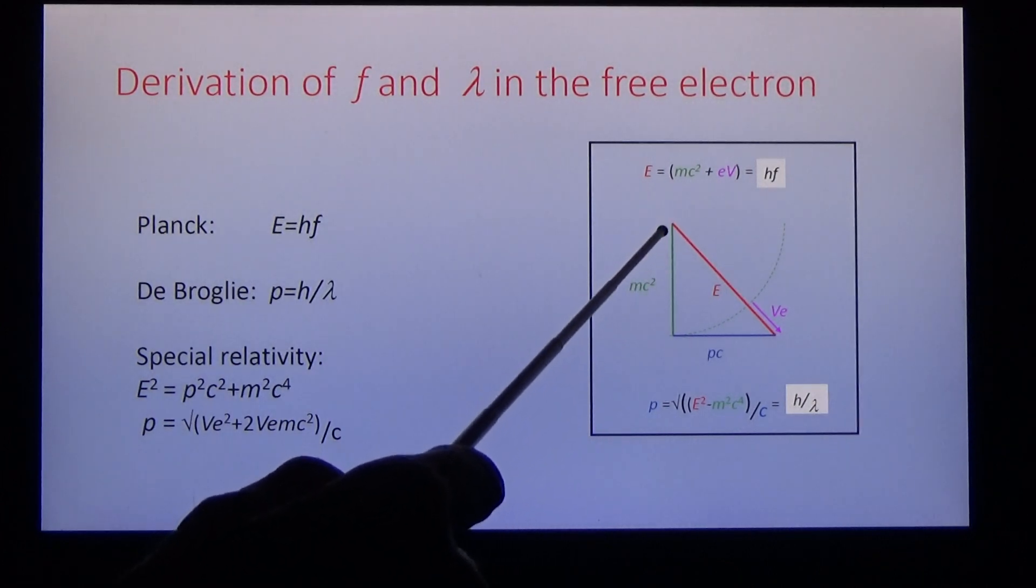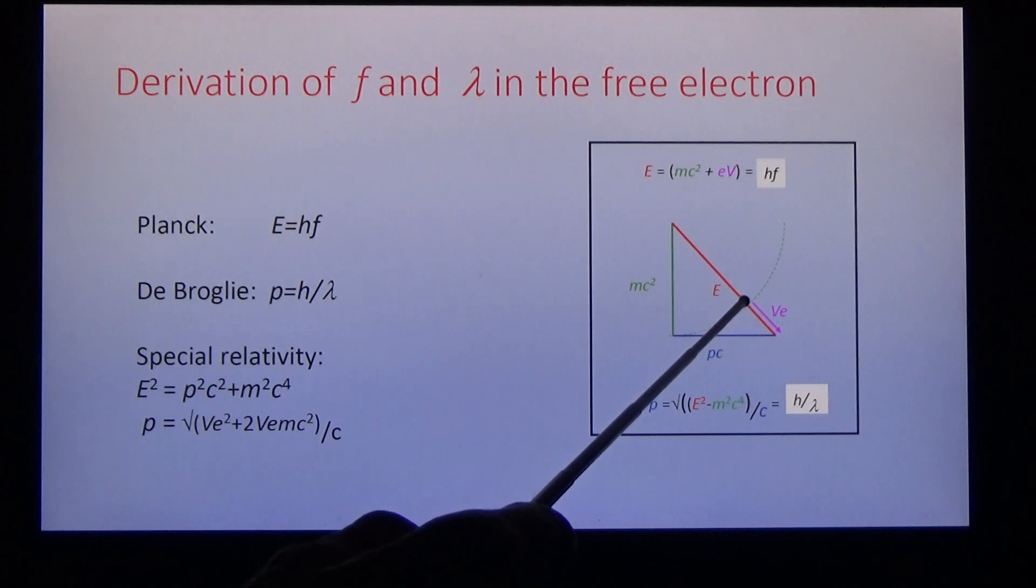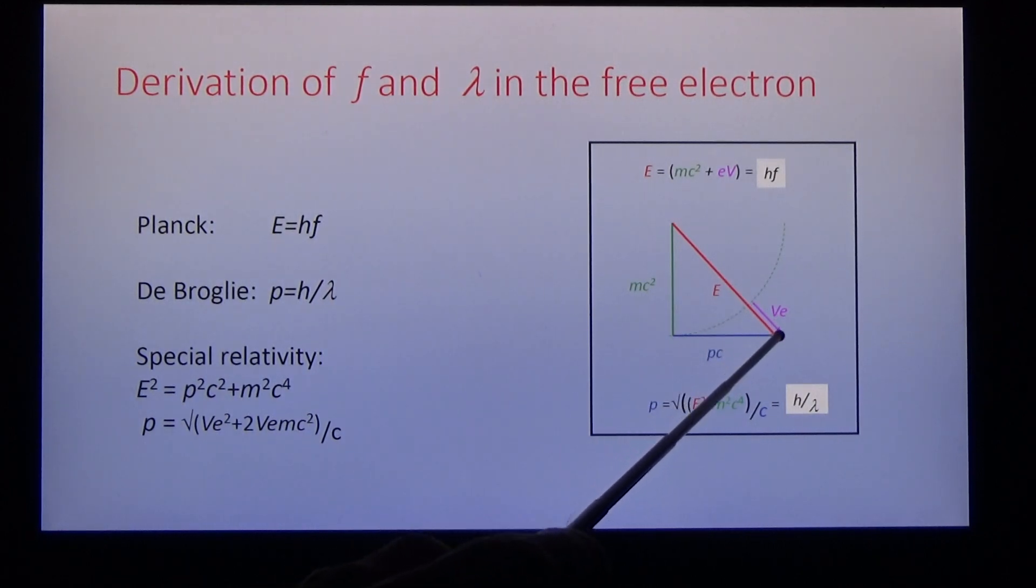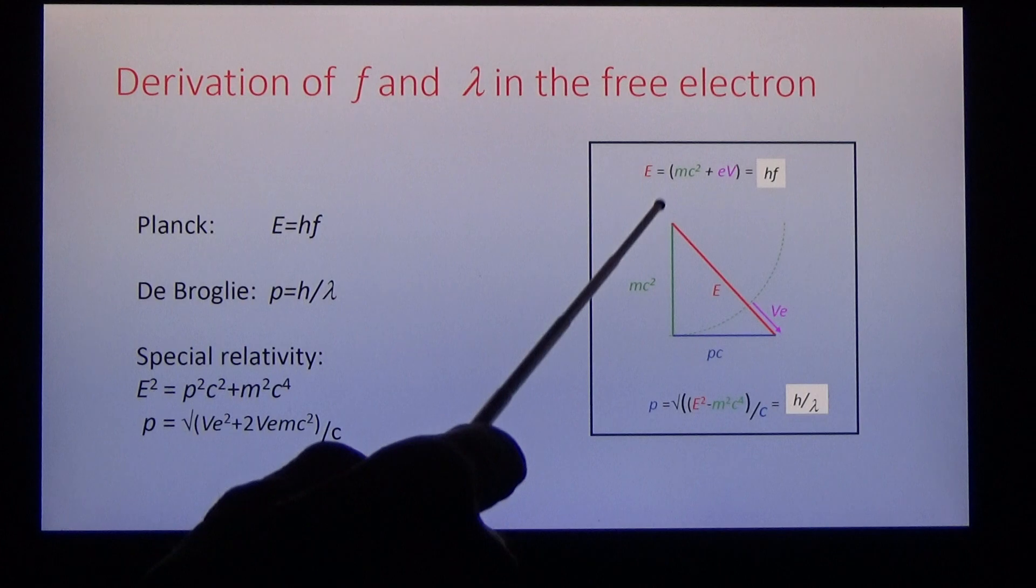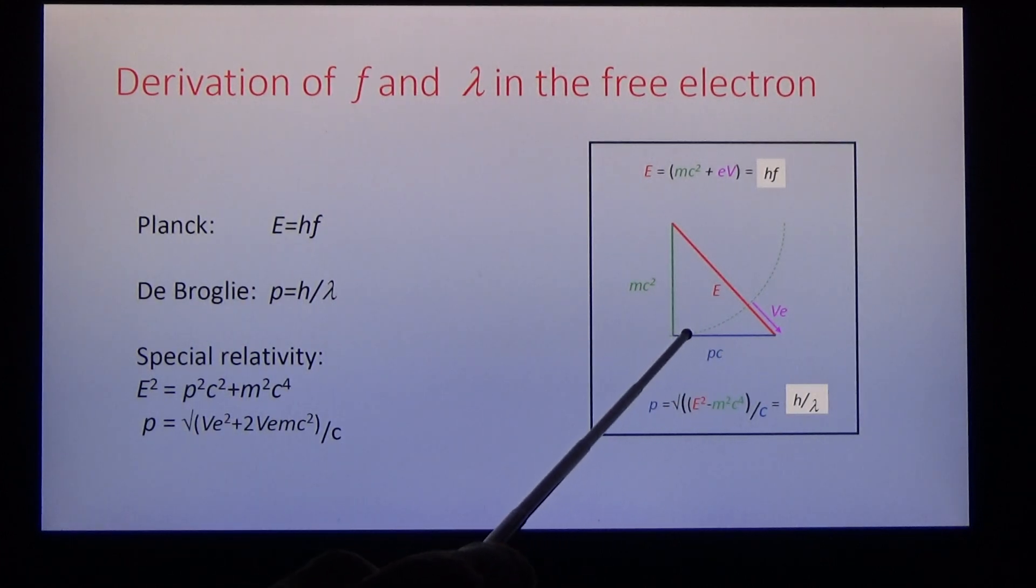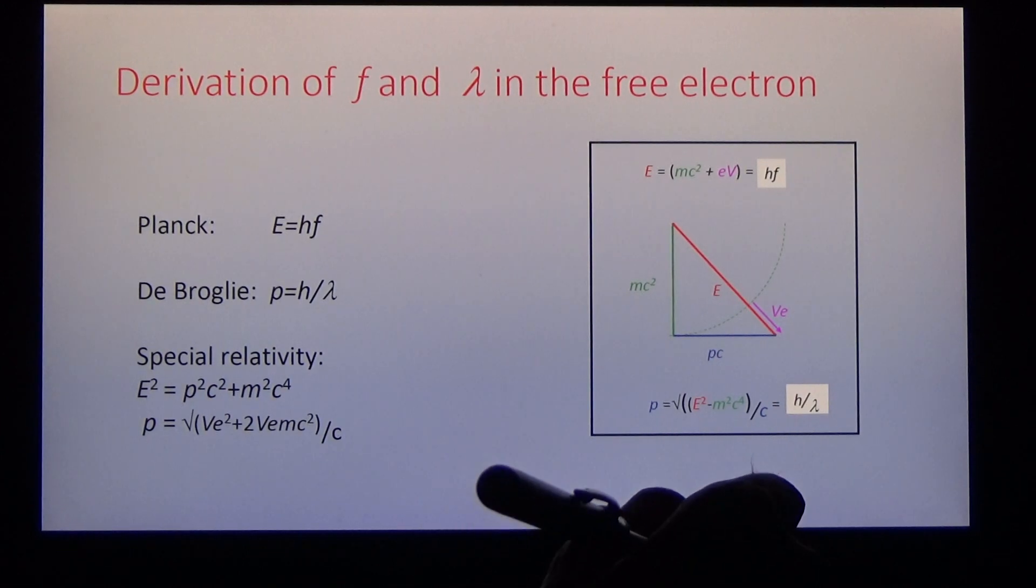The mc squared for the electron is known. The energy is the electron mass energy plus the acceleration energy of the electron gun. And the vector joining these two vectors with the right angle is the momentum of the electron probe. And with this knowledge, we can calculate the frequency and the wavelength and tabulate the results.